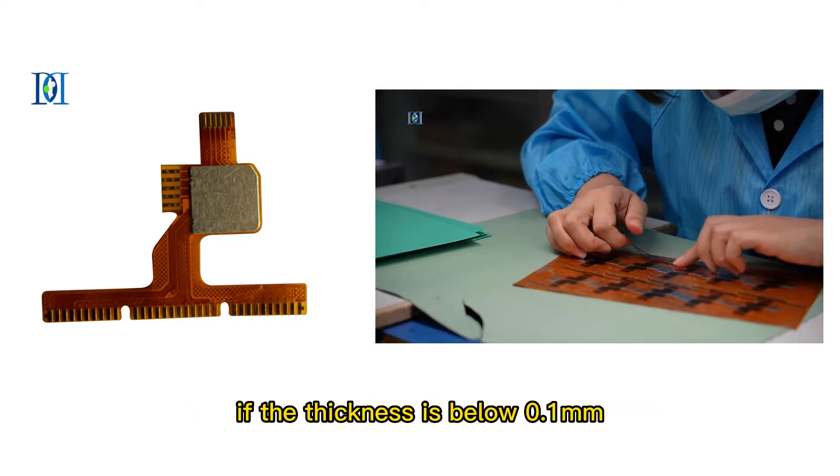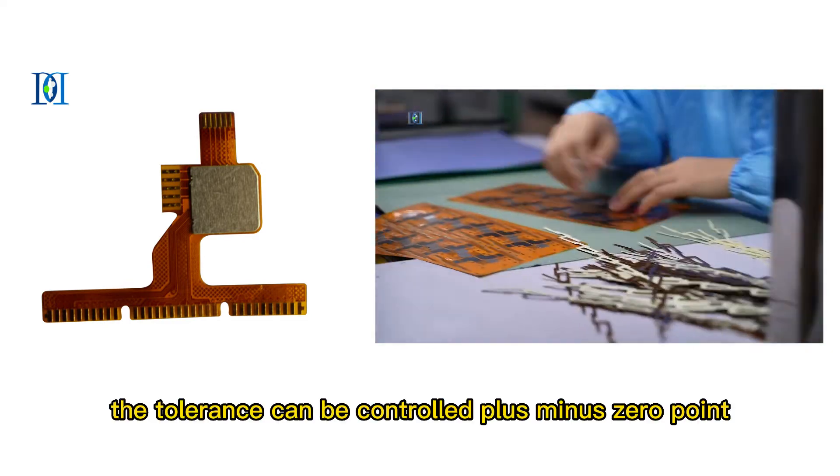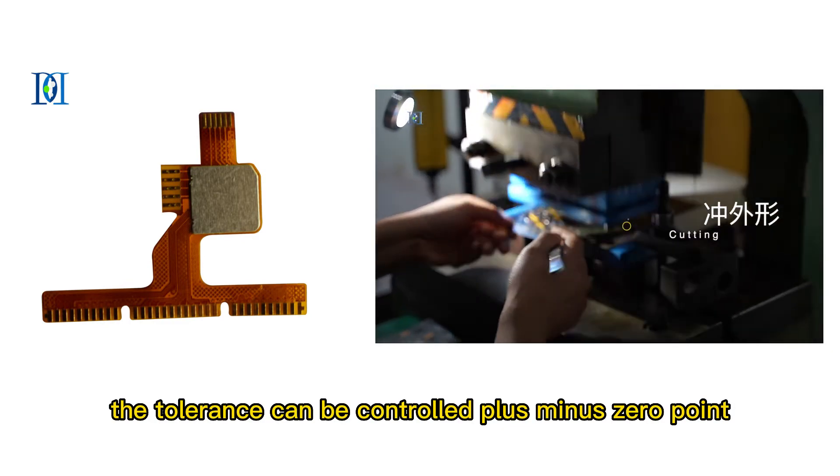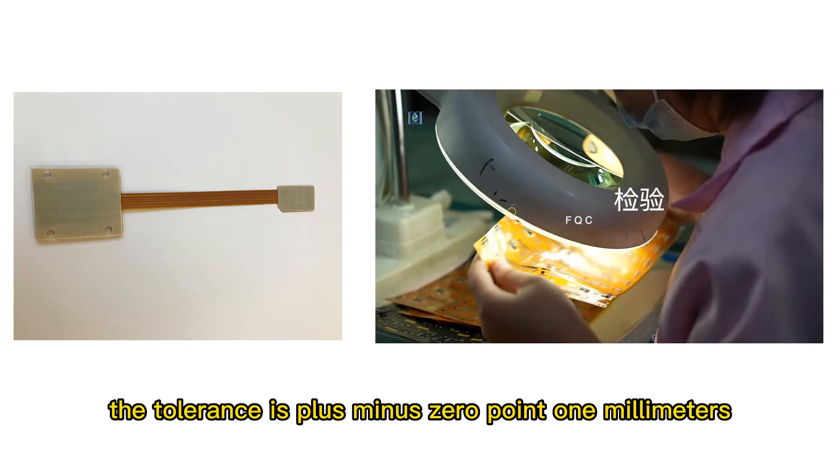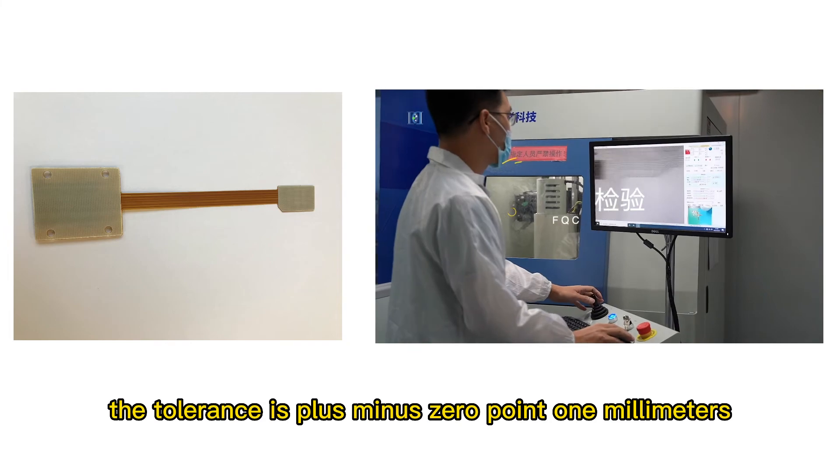3. FR4 stiffener. If the thickness is below 0.1 mm, the tolerance can be controlled plus minus 0.05 mm. If the thickness is more than 1 mm, the tolerance is plus minus 0.1 mm.